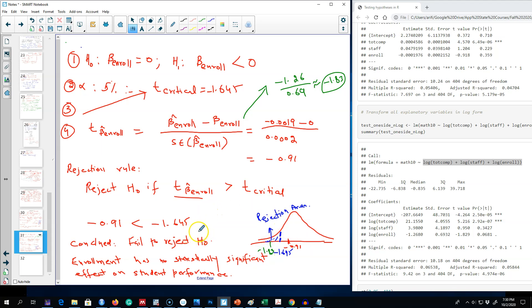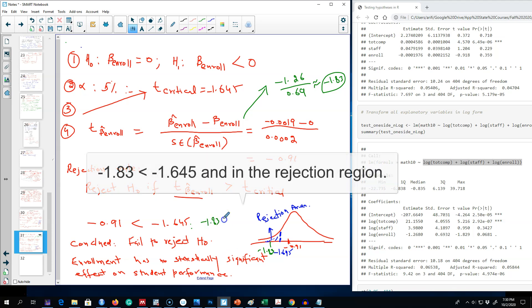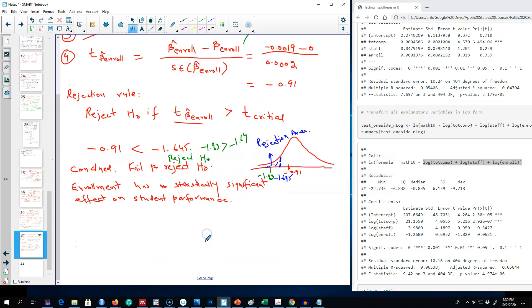Minus 1.83 is greater than minus 1.64, so in this case we reject H0. By rejecting H0, we conclude that enrollment has a negative and statistically significant effect on student performance as shown by math scores of those students. We can easily interpret this coefficient value based on the level-log model that we discussed in the previous chapter.